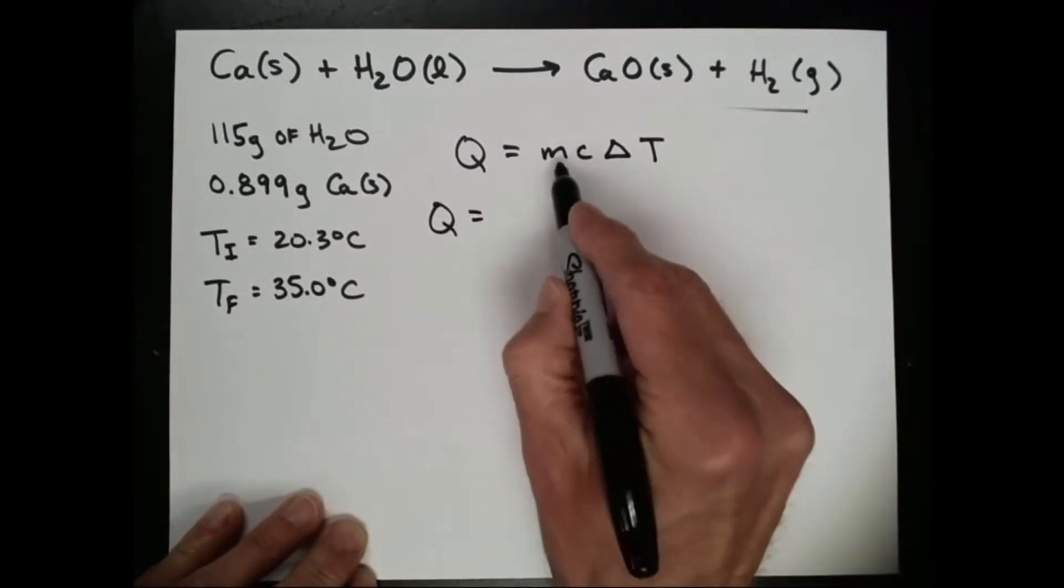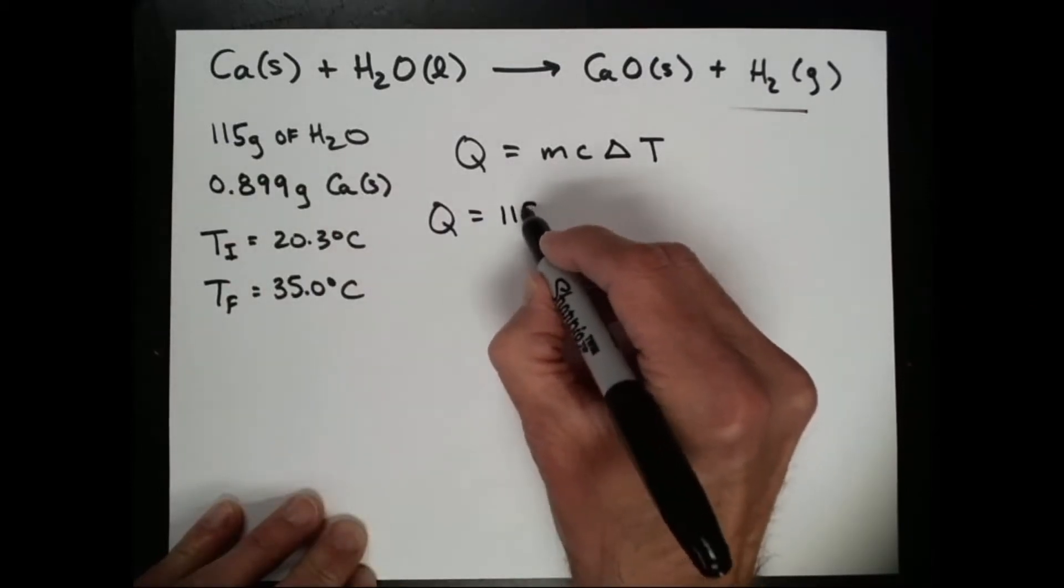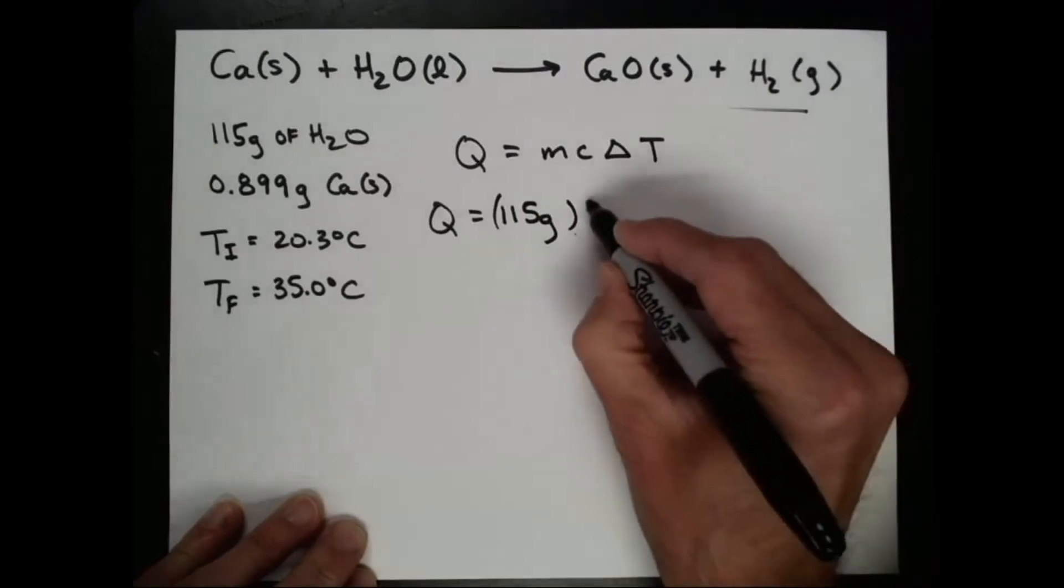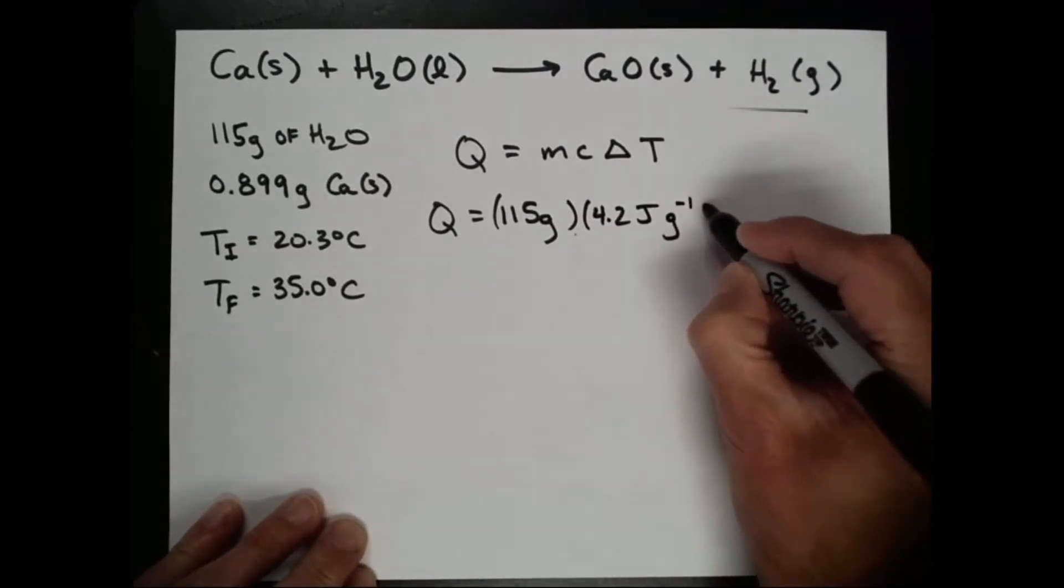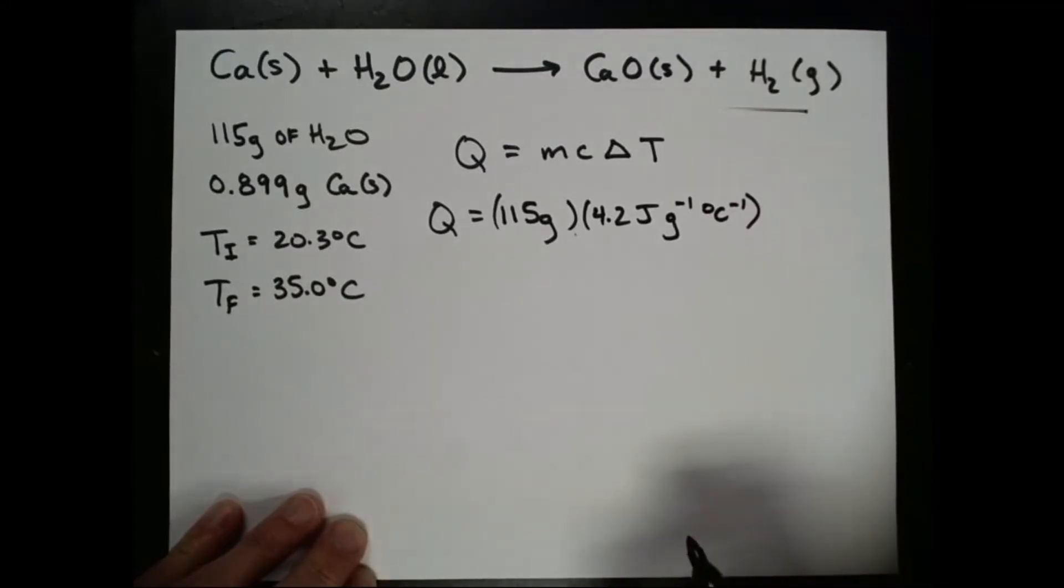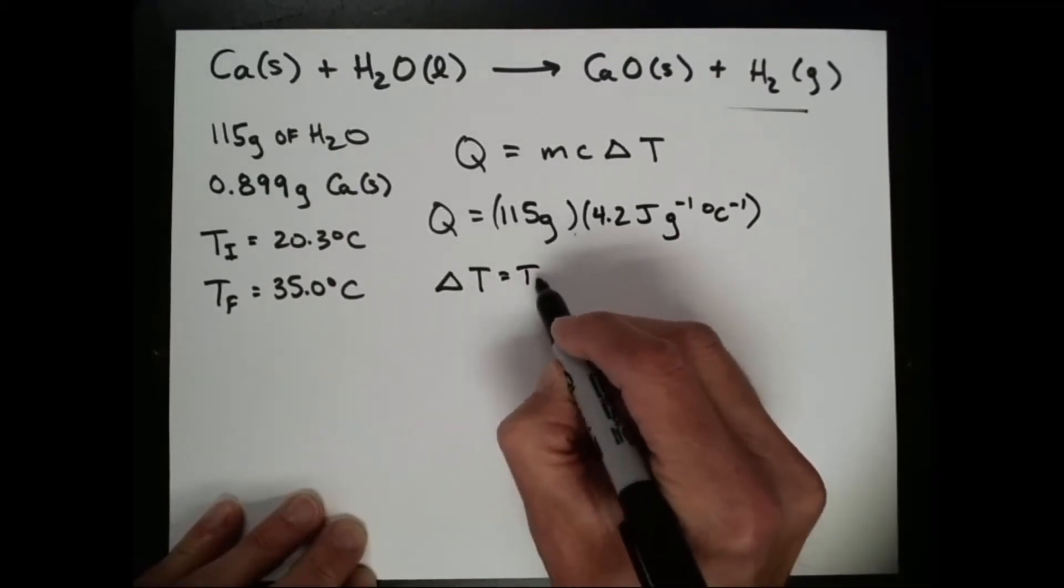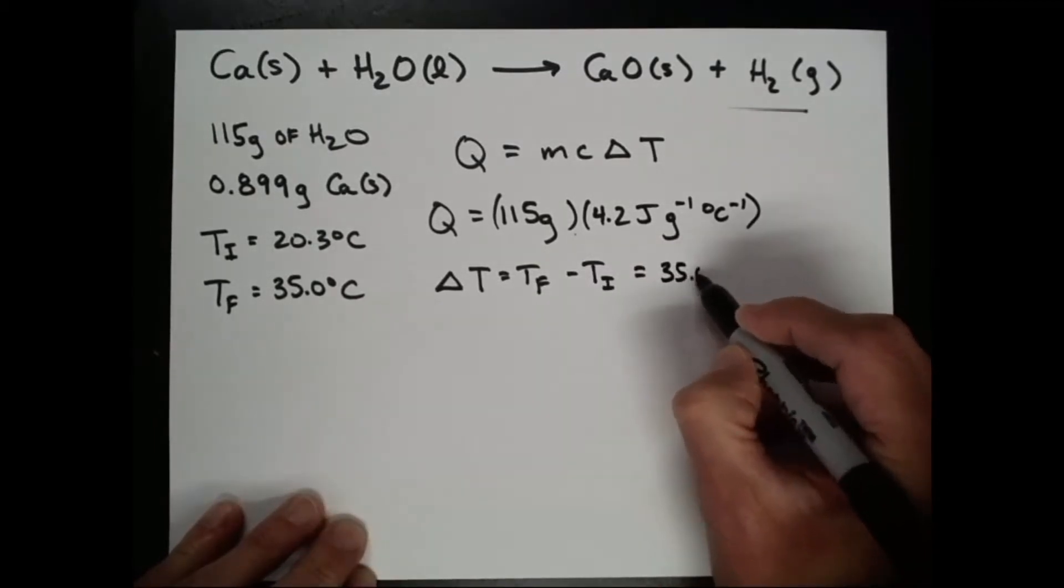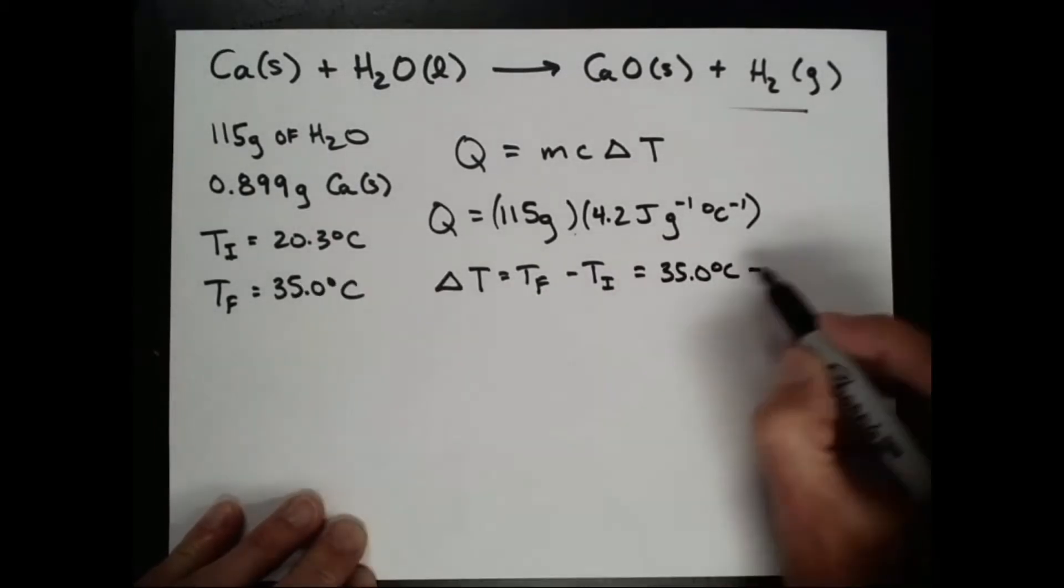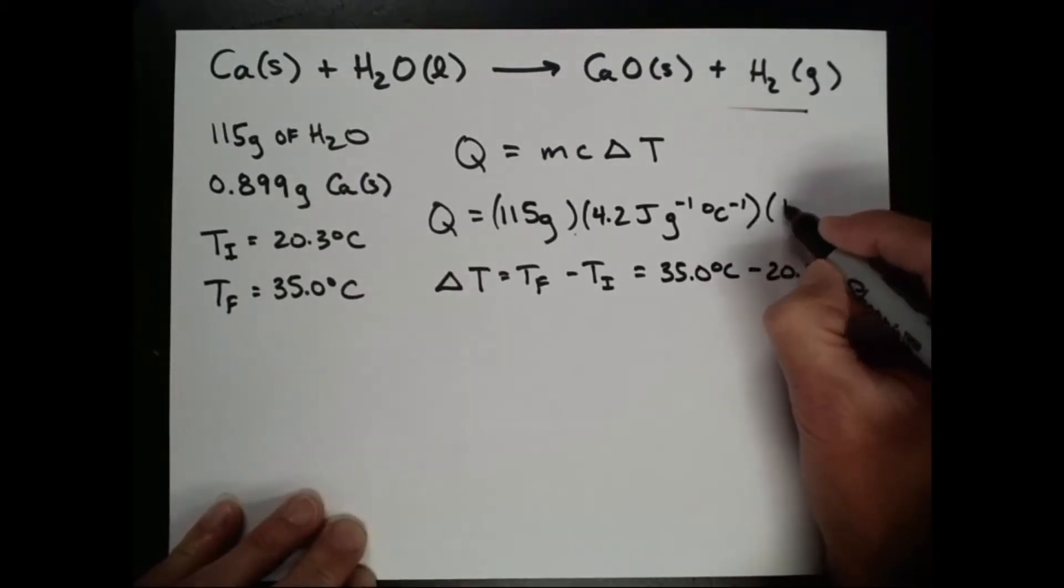Let's see, the mass of the water that gained the energy was 115 grams. The specific heat of water, that's 4.2 joules for every gram for every degree Celsius change that the water undergoes. And then our change in temperature, that's going to be the final temperature minus the initial temperature, which is 35 degrees Celsius minus 20.3 degrees Celsius. That's 14.7 degrees Celsius.